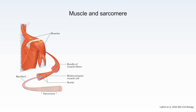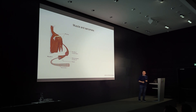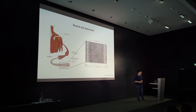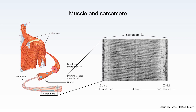In skeletal and cardiac muscles, each muscle cell contains bundles of myofibrils. Each myofibril is segmented into a small contractile unit called a sarcomere. Here is a typical textbook image of the sarcomere — in different zones, they have different morphologies, caused by a different arrangement of the two main types of filaments inside a sarcomere.